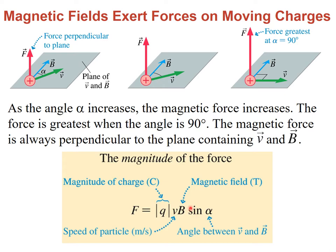The direction of the force is a bit complicated. You have to use your right hand pointing four fingers in the direction of the velocity, and then curling the fingers in the direction of the magnetic field. In doing so, the thumb will give you the direction of the force. Since the force depends on the sine of the angle, if the angle is zero, sine of zero is zero, and the force is zero.